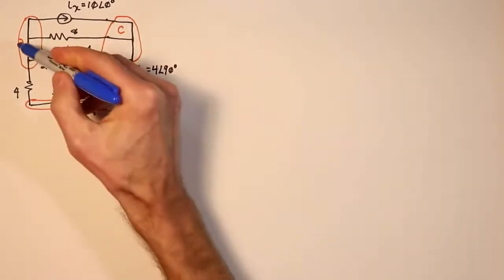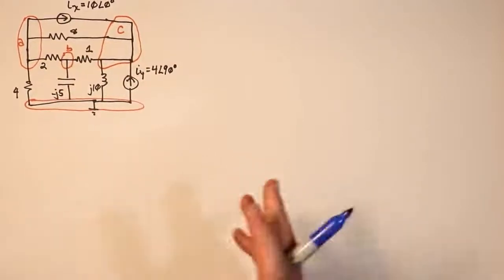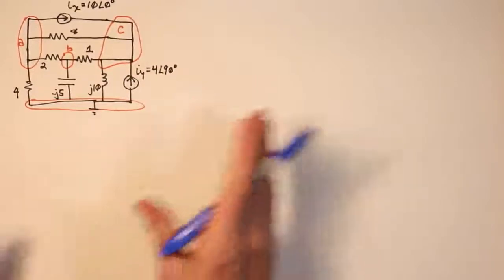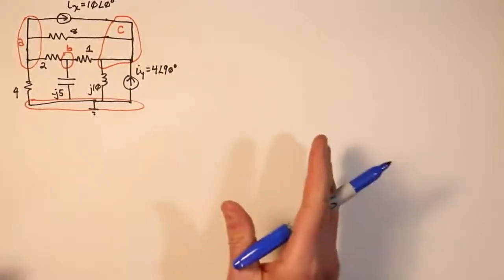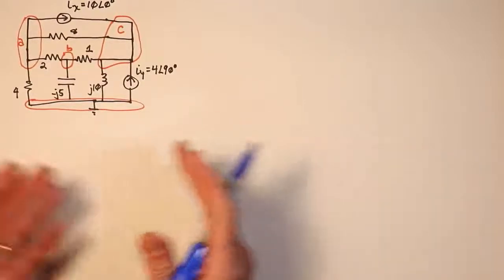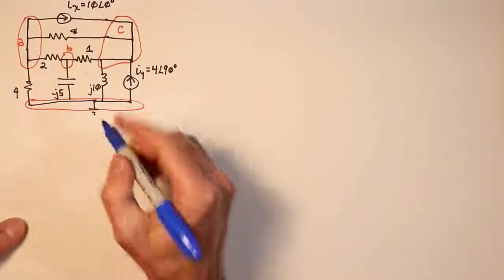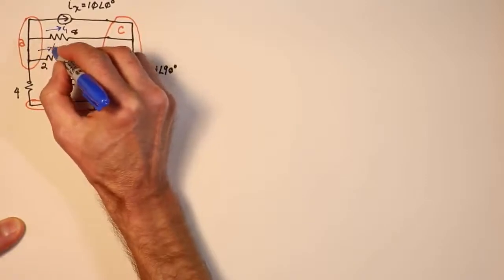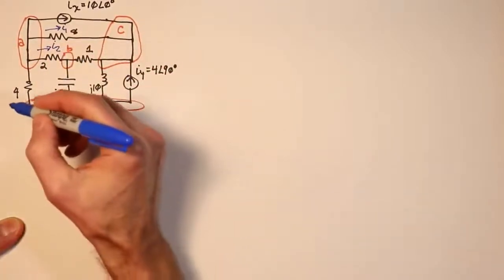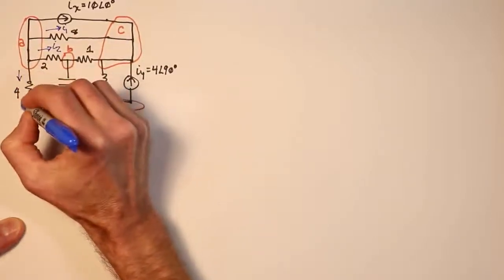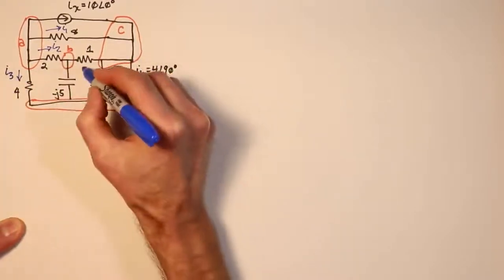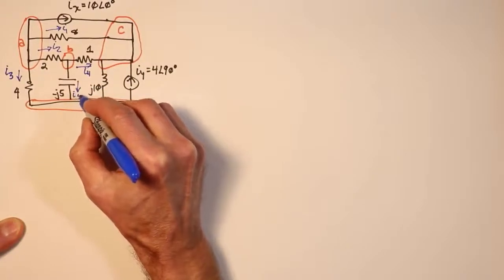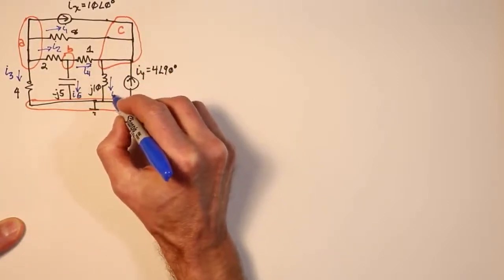Now we want to identify some currents — individual branch currents and so forth. Eventually we're going to come up with equations that we'll solve for VA, VB, and VC, and this is all about a KCL summation. It doesn't really matter which direction you apply; everything will come out in the end. So: I1 through the 8 ohm resistor, I2 through the 2 ohm, I3 down through the 4 ohm resistor, I4 through the 1 ohm resistor, I5 down through the capacitor, and I6 down through the inductor.